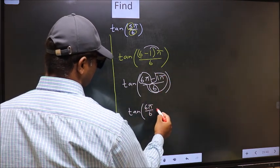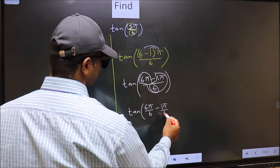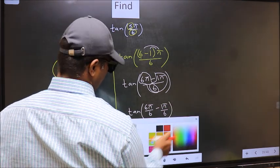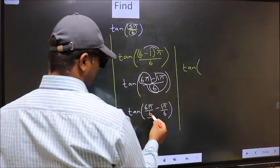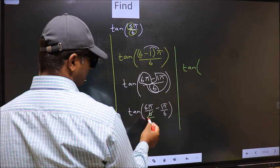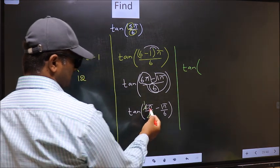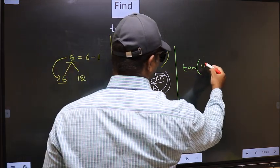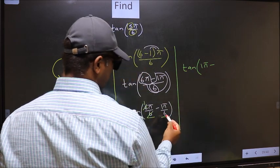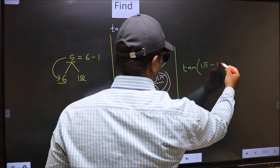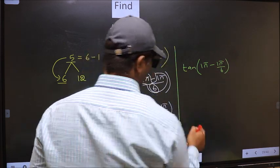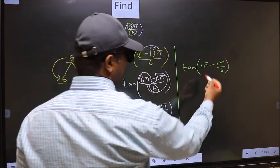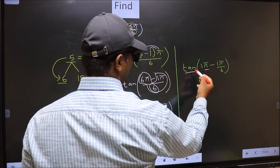Next, tan - over here you should cancel 6 and 6, so we get π minus π/6. Next, here we have π, so tan is not going to change. It will remain tan, and inside we get this angle π/6.